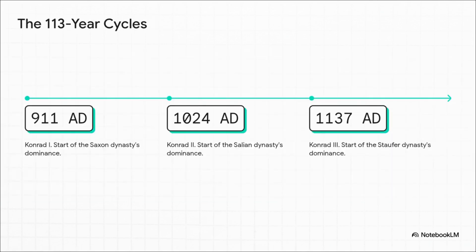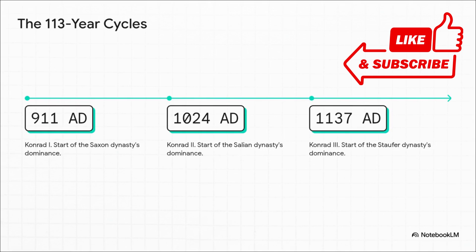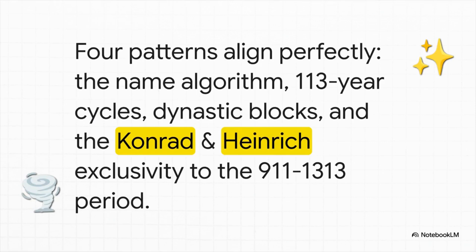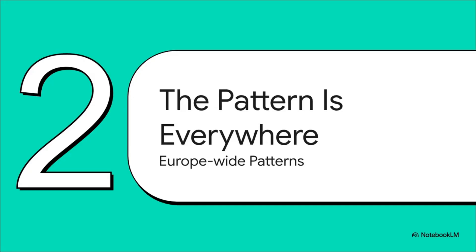That name algorithm is just layer one. The second layer is all about time. Three major dynasties — the Saxons, the Salians, and the Staufers — each had their rise kicked off by a king named Conrad, and the start dates are separated by almost exactly 113 years: 911, then 1024, then 1137. It's like clockwork. And crucially, these aren't isolated coincidences — four different patterns are all layered on top of each other, fitting together perfectly. The probability of that happening by chance is staggeringly low.